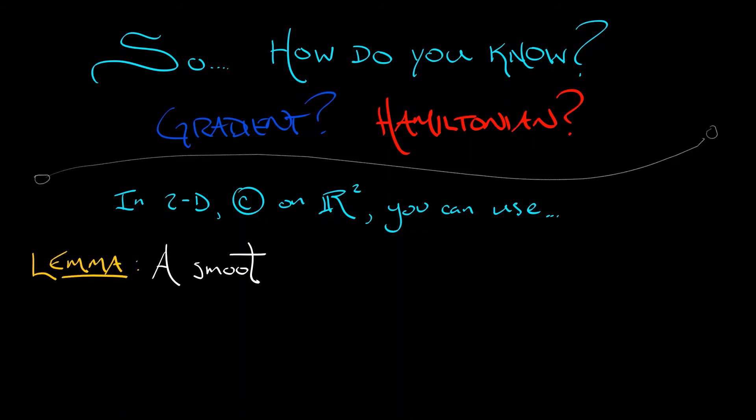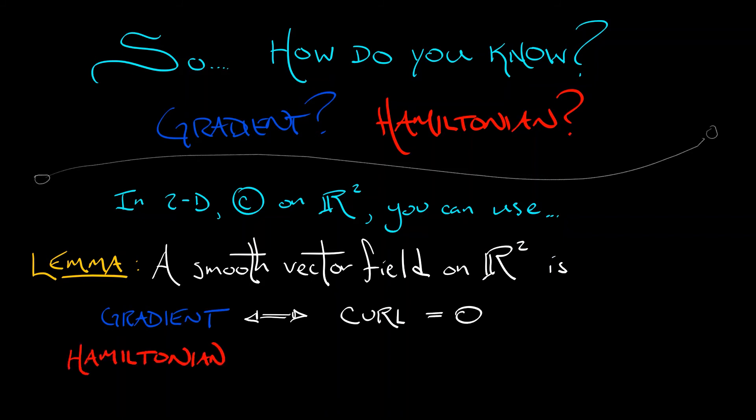It has to do with grad and curl and div and all that stuff. Here's the lemma. A smooth vector field on the plane is a gradient field if and only if its curl identically vanishes. It's everywhere zero. And it's a Hamiltonian vector field if and only if the divergence is zero everywhere.